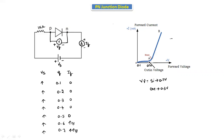These are the forward bias characteristics. We draw the forward bias characteristics in the first quadrant. Now let's see the reverse bias characteristics.